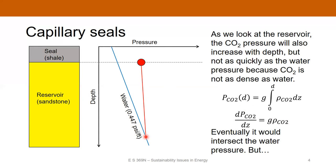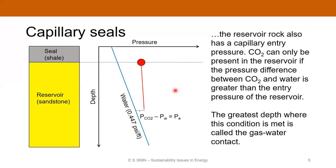There is one other complicating factor: our reservoir also has a non-zero capillary entry pressure. All rocks have a non-zero capillary entry pressure — sometimes it might be very small, but non-zero. The carbon dioxide can only exist in the pore space within the reservoir if its pressure is larger than the entry pressure. The greatest depth at which the CO2 can exist is where the capillary pressure equals the entry pressure of the reservoir. Below that, the CO2 will not be present as a continuous phase. We call this point the gas water contact.